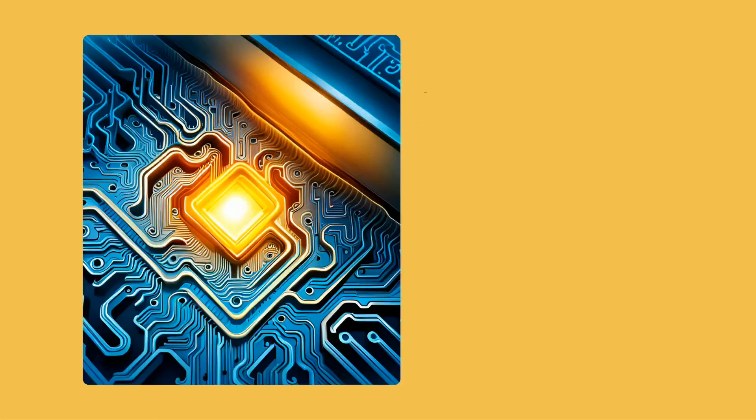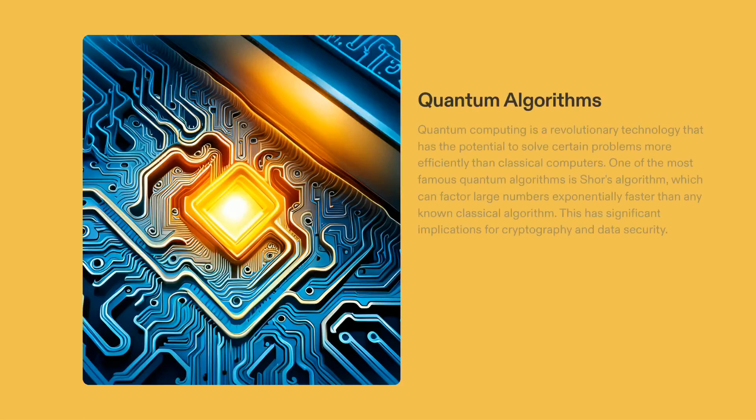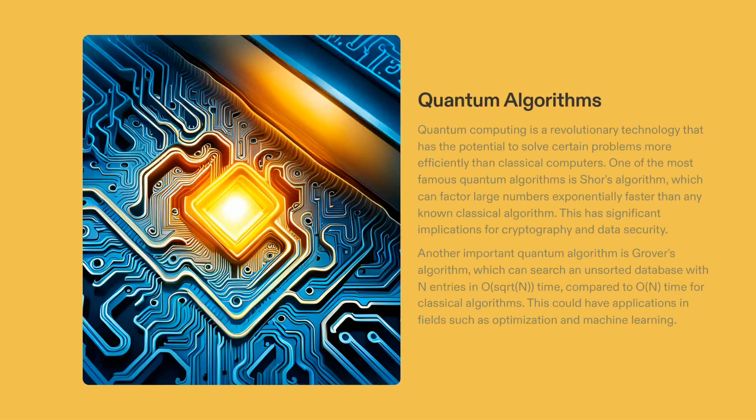Quantum algorithms are crucial to quantum computing. Shor's algorithm stands out among them, as it is able to factor large numbers much quicker than classical algorithms can, having major effects on cryptography and data protection. Another celebrated algorithm is Grover's algorithm, which is able to search through an unsorted database much quicker than classical algorithms can, in O square root N time. This innovation can be used to improve optimization and machine learning processes.